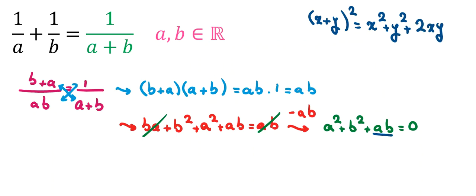So here, because I have AB, I want to use 2XY, this identity. I multiply both sides by 2: 2A squared plus 2B squared plus 2AB equals 0.